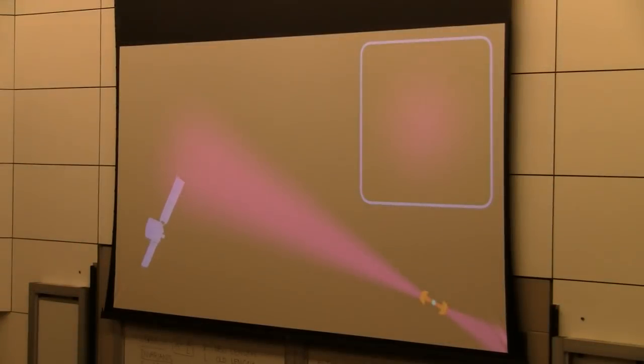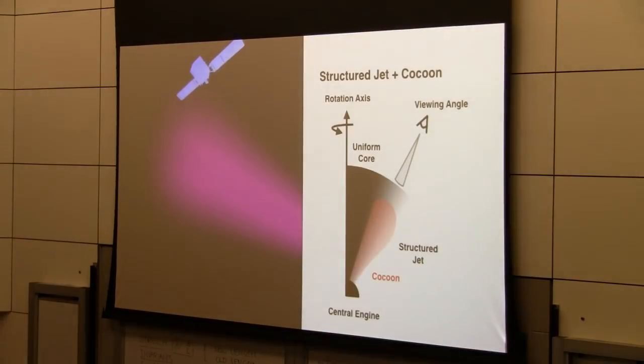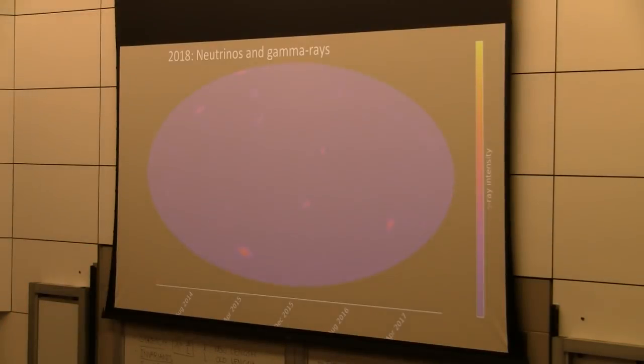What we think is happening is that we're looking at this burst off to the edge of the jet. As the jet is coming out, it's dragging material with it. So we have a relativistic jet and a cocoon, and we're seeing the non-thermal emission, the short spike from the relativistic jet, and then the longer tail from cocoon emission.